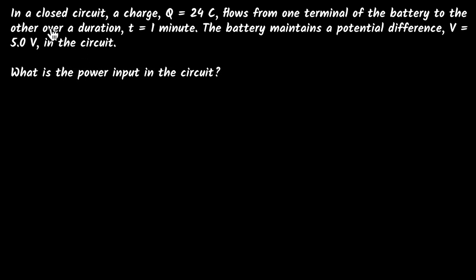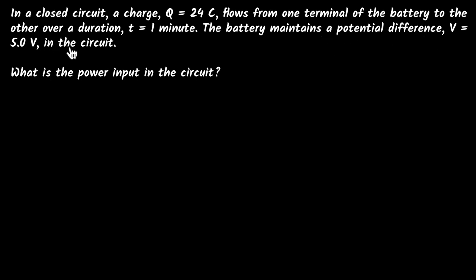Let's solve a few problems on electric power. Here's the first one. In a closed circuit, a charge of 24 coulombs flows from one terminal of the battery to the other over a duration of one minute. The battery maintains a potential difference V equals 5 volts in the circuit. What is the power input in the circuit?